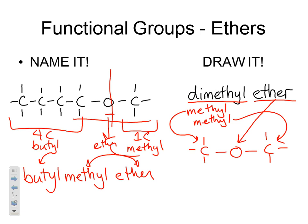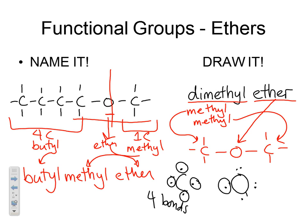A quick note on carbon and oxygen bond counts: carbon has four valence electrons, so it forms four bonds. Oxygen has six valence electrons — two lone pairs and two single electrons — so it only forms two bonds. You'll notice in both the alcohol and ether examples, the oxygens are only forming two bonds. Oxygen only gets two bonds.